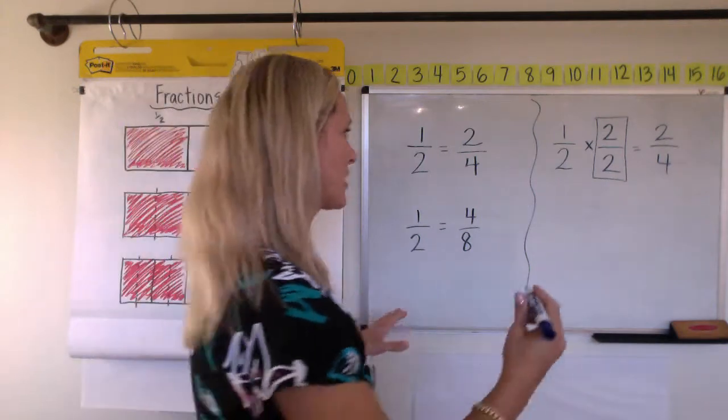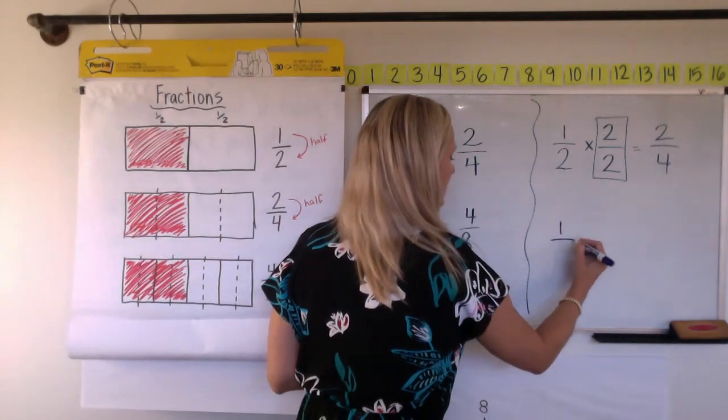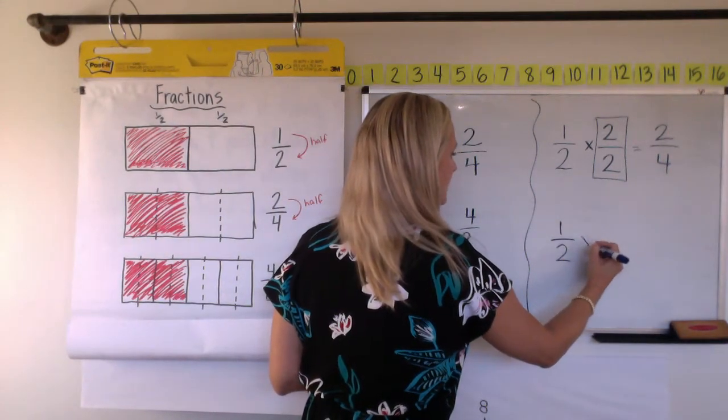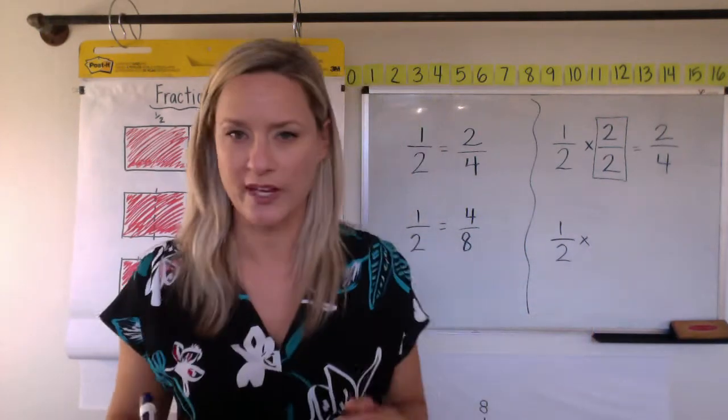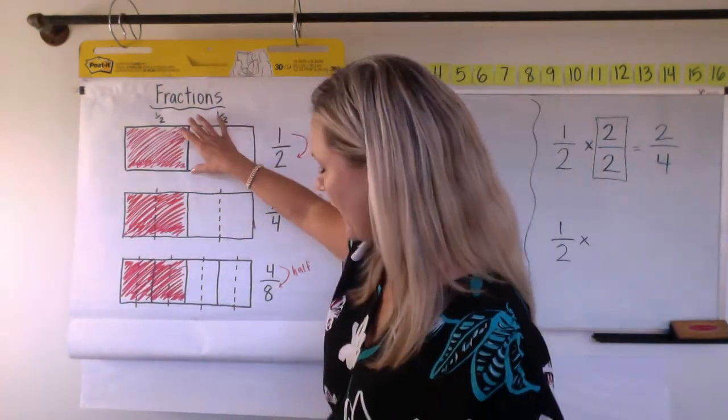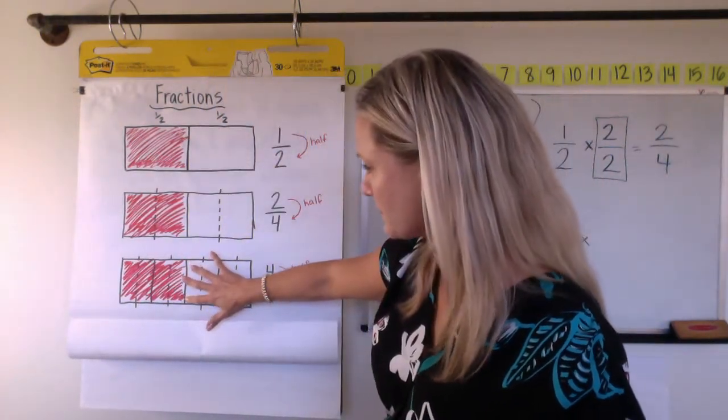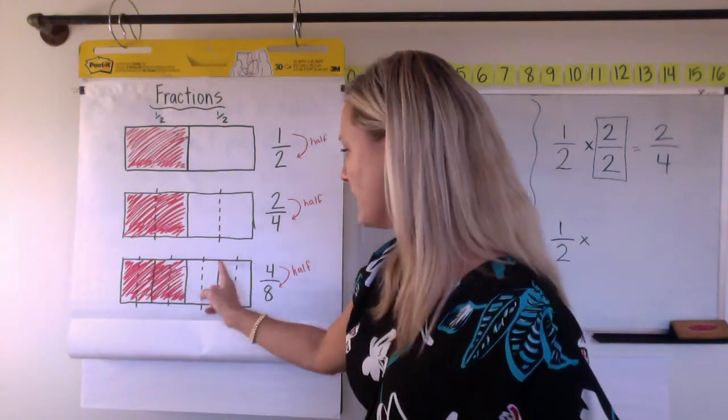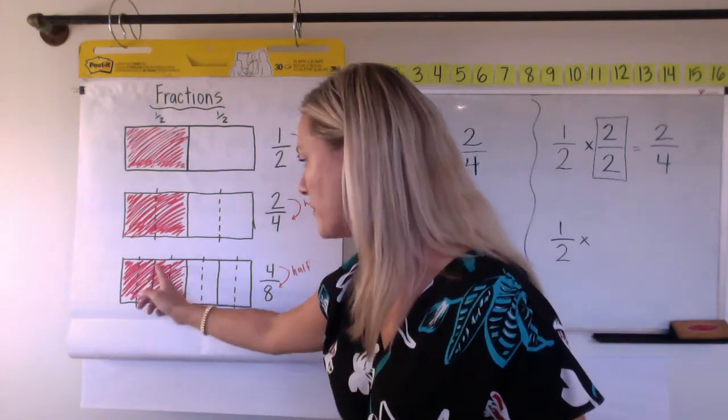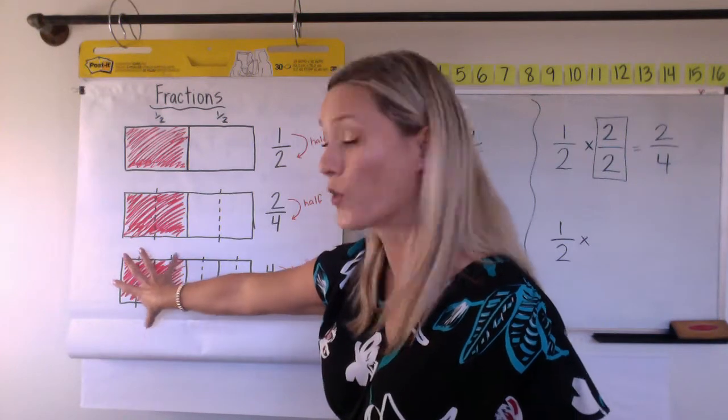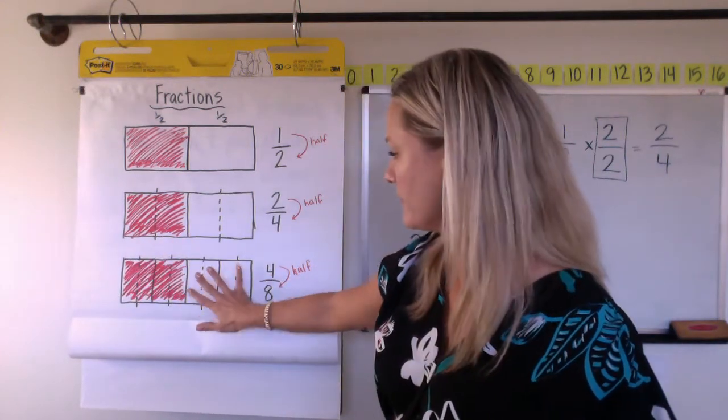So thinking about starting with your one half, and then how many times did we have to break that up? So we had a half, right? And we broke the half and half and then we broke them again. So we had four pieces here and four there.